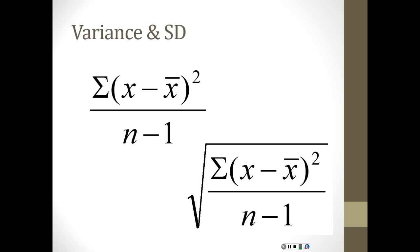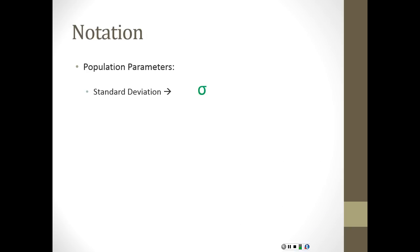Then if you take the square root of the variance, you get the standard deviation. For notation: population parameters use lowercase sigma (σ) for standard deviation and sigma squared (σ²) for variance — which corresponds exactly to the math, since squaring the SD gives variance and taking the square root of variance gives SD. For sample statistics, use s for standard deviation and s squared (s²) for variance.